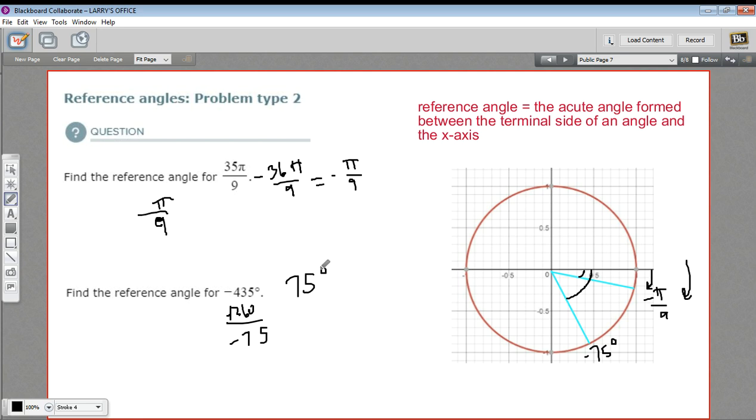So that is how to find a reference angle when you've got a value that's greater than 2π or greater than 360.